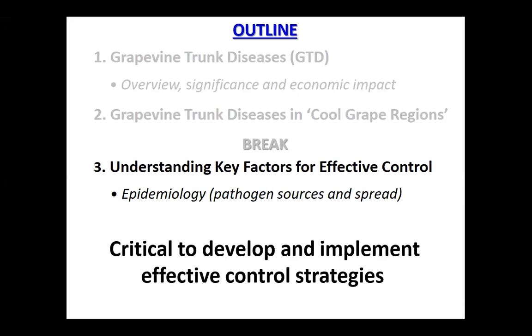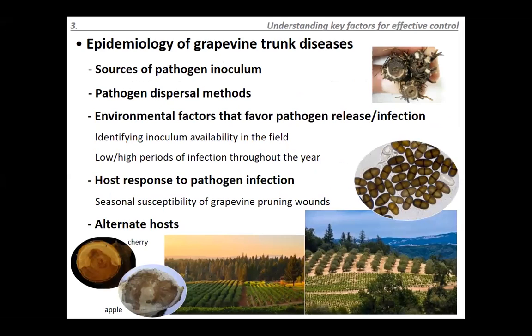In terms of the epidemiology of grapevine trunk diseases, we need to understand the sources of pathogen inoculum — including inoculum coming from infected nursery material — how pathogens disperse, and which environmental factors favor pathogen release or infection. A lot of work has been done identifying inoculum in the field and trying to identify periods of high and low infection throughout the year, to determine the optimum times for control.